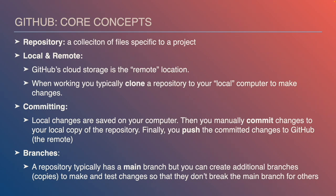GitHub has ways that when you start to make commits and push your changes back to the remote location, it'll check your changes against any other changes somebody else might have made and identify if there are conflicts — if you've both tried to change the same thing in different ways. Committing is the process of saying the changes I made I want to commit to the repository, and I'm going to document what changes I made.